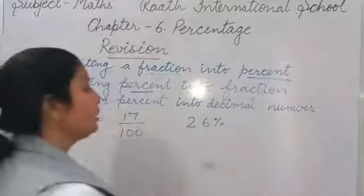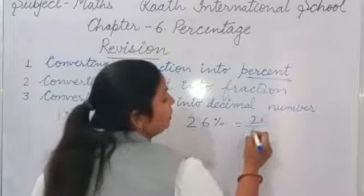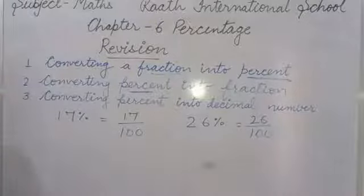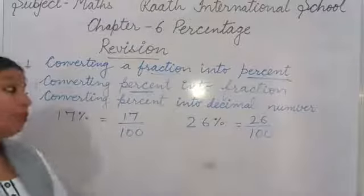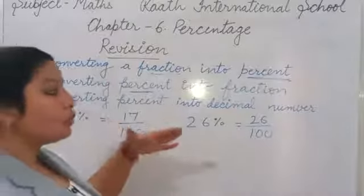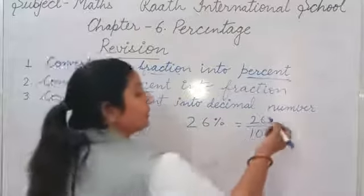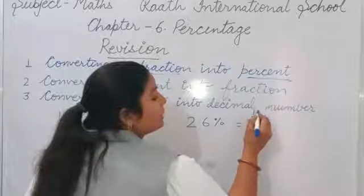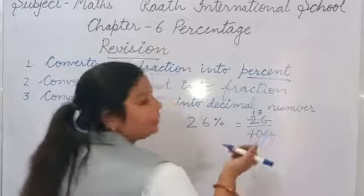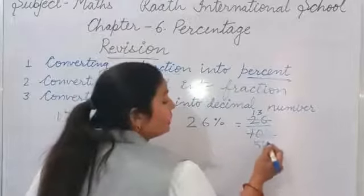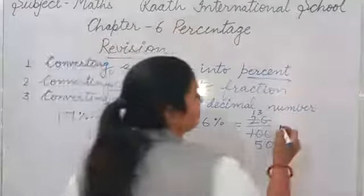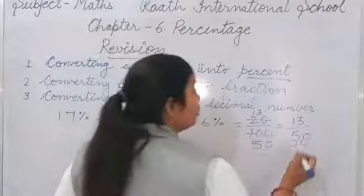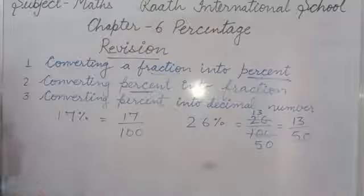Another example: if we have 26 percent. How will we do it? 26 upon 100. We can see that 26 and 100 are both in the 2 times table. So we divide numerator and denominator both by 2. 26 divided by 2 is 13, and 100 divided by 2 is 50. So it becomes 13 upon 50. That's your answer. Like this we can convert percent into fraction.